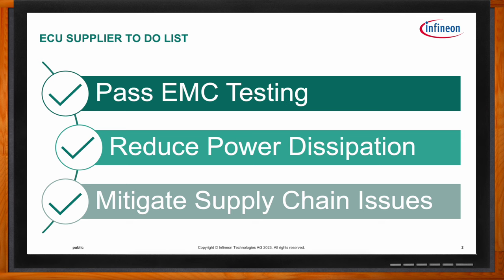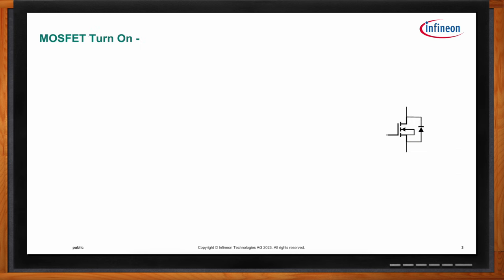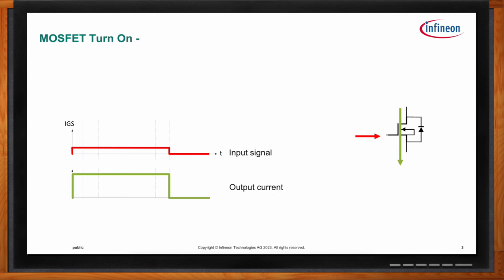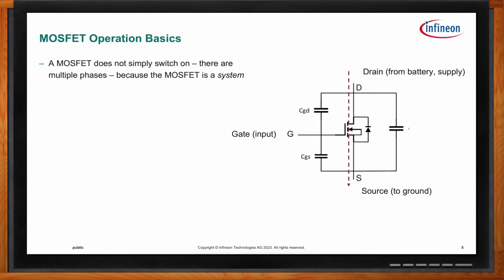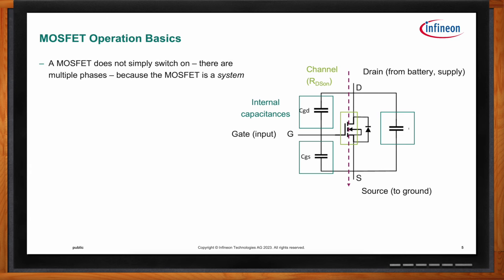Let's start at the beginning and talk about the process of how a MOSFET turns on. To turn on a MOSFET, we give it an input signal and that should turn on the output so current flows through it. But that's the ideal. The reality is very different — a MOSFET does not simply switch on. There are multiple phases because the MOSFET is a system. We want current through the channel, but first we have to charge up various internal capacitances, like buckets you have to fill with water. To turn off the MOSFET, we then have to drain those capacitors as well.